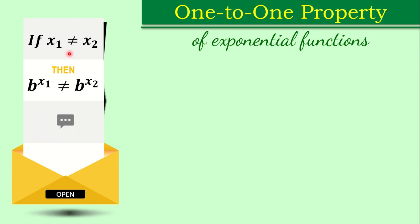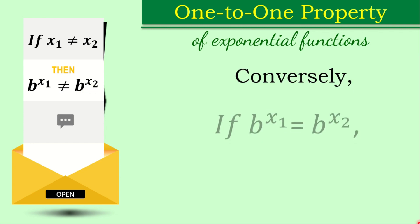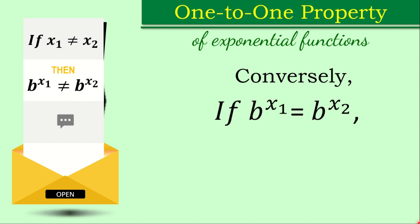If x sub 1 is not equal to x sub 2, then base b raised to the power of x sub 1 is not equal to base b raised to the power of x sub 2. Conversely, if b raised to the power of x sub 1 is equal to b raised to the power of x sub 2, then we can say that x sub 1 is equal to x sub 2.